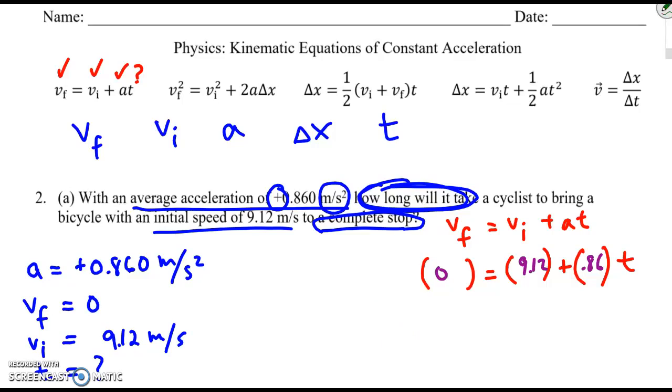I subtract 9.12 from both sides. It goes away. And I have 0.86 times t. But wait a second. When I divide both sides by 0.86, I get negative 10.6 seconds as the time.